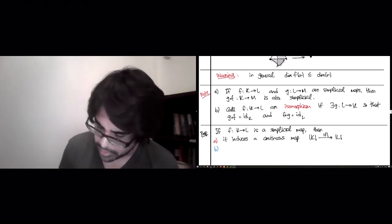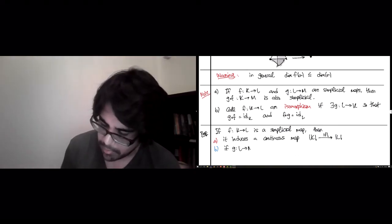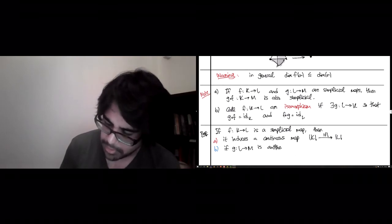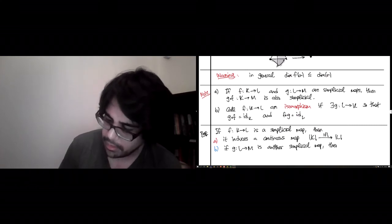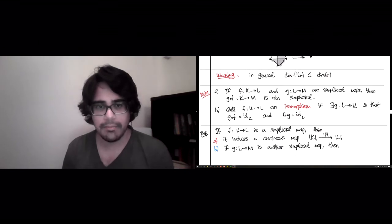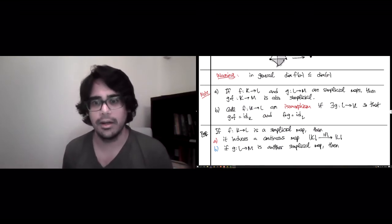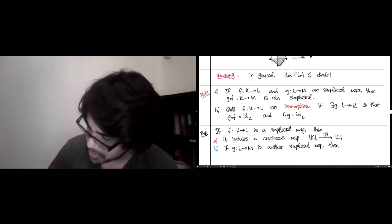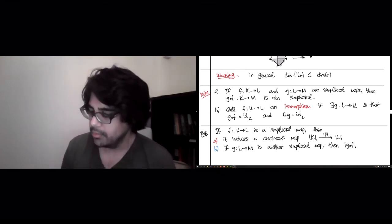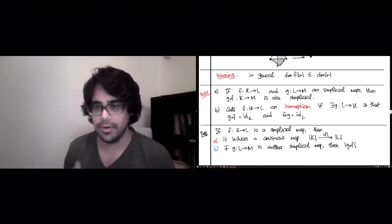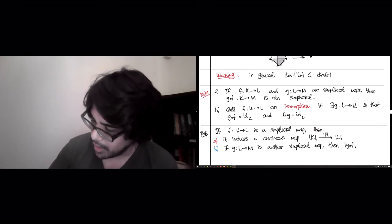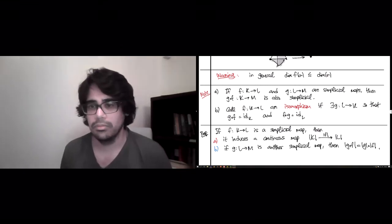And the other good thing you could hope for is if G from L to N is another simplicial map, then whether you compose the simplicial maps and then induce the continuous map, or first induce the continuous maps and then compose them, it doesn't matter. So this is a nice sort of, it warms the cockles of your heart type of result. This is what happens if you compose the simplicial maps first and then pass to the induced continuous map. And this is exactly the same as doing this.